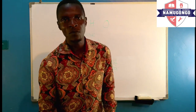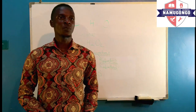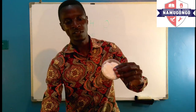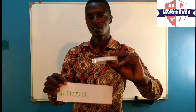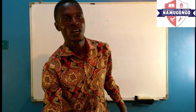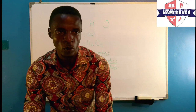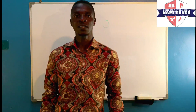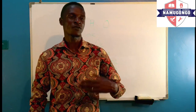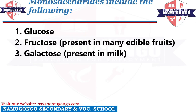Looking at some examples of monosaccharides: one is glucose, which is very common. The second type of monosaccharide is fructose. Fructose is normally present in the fruits that we eat — just like the name suggests. So it's sugars that you normally get from fruits.